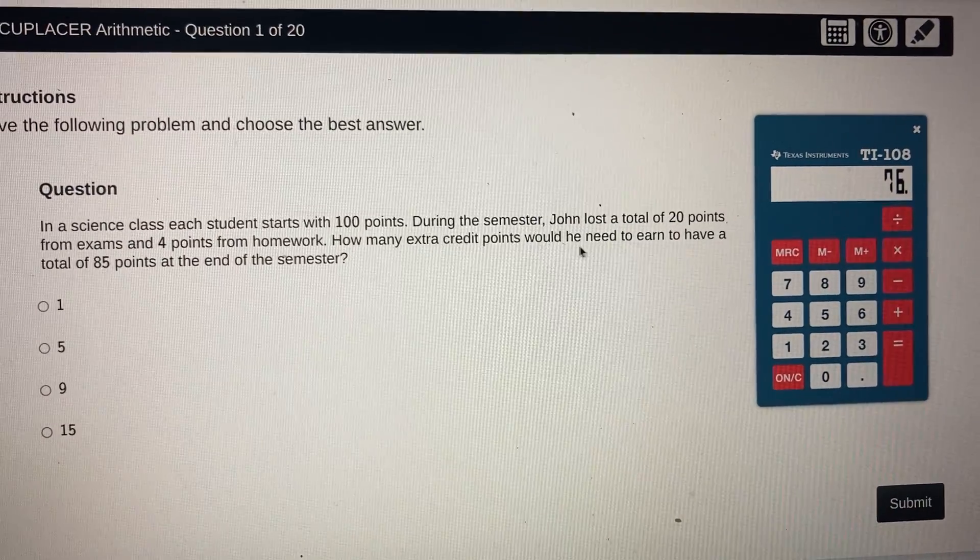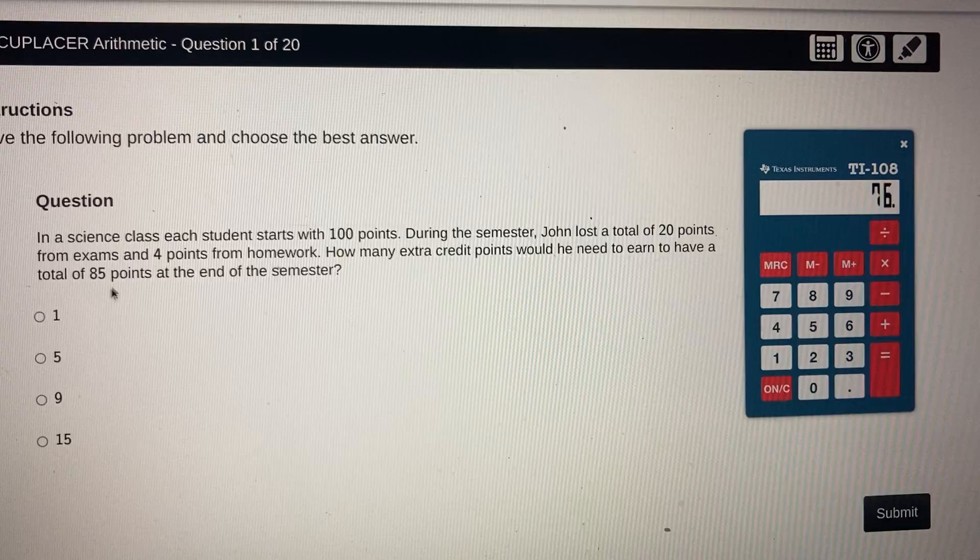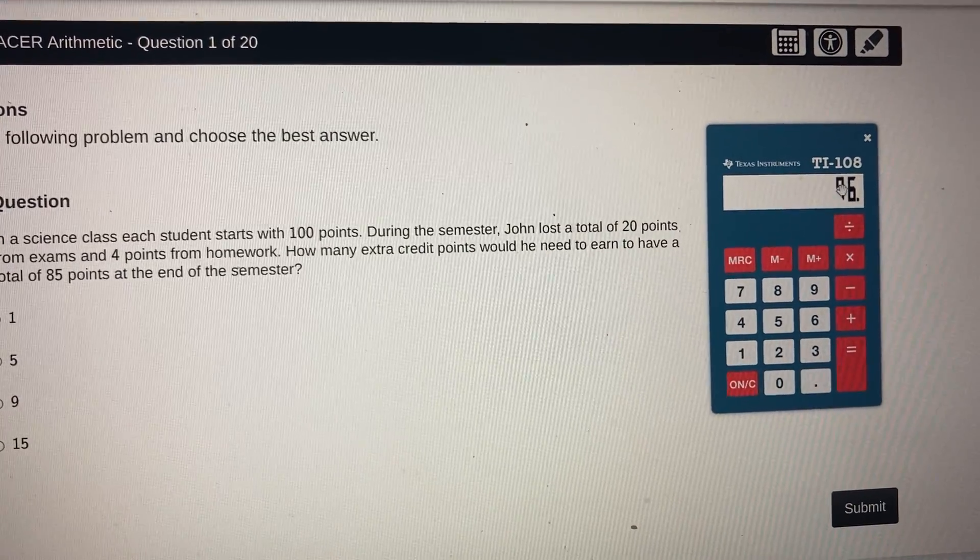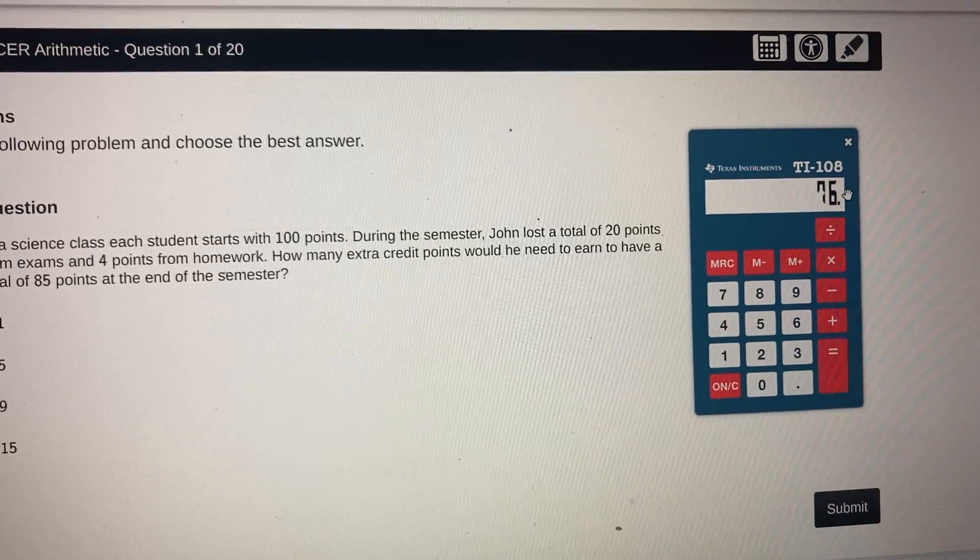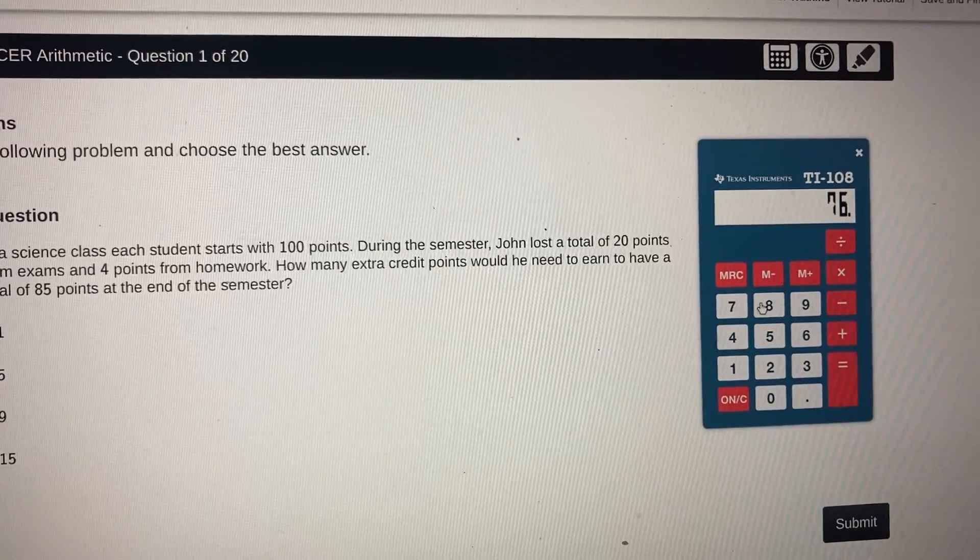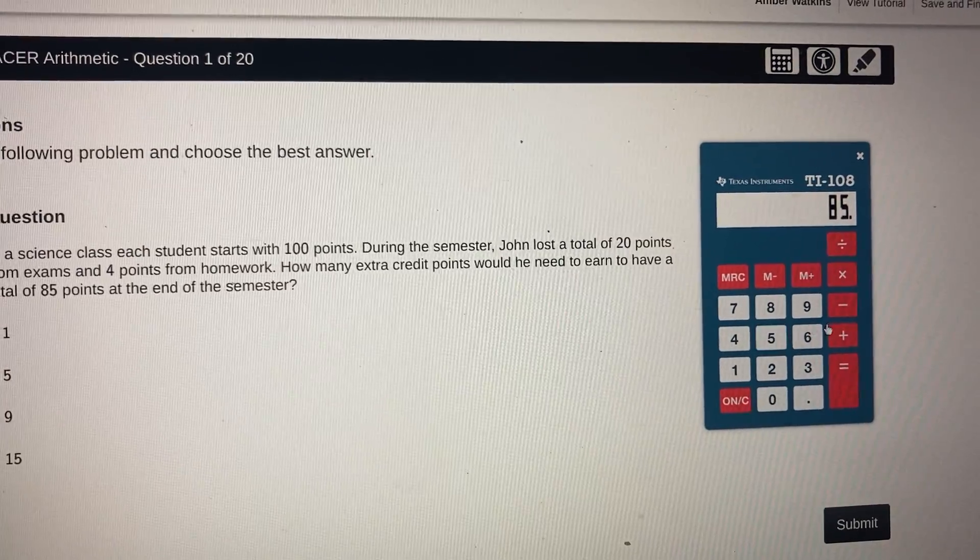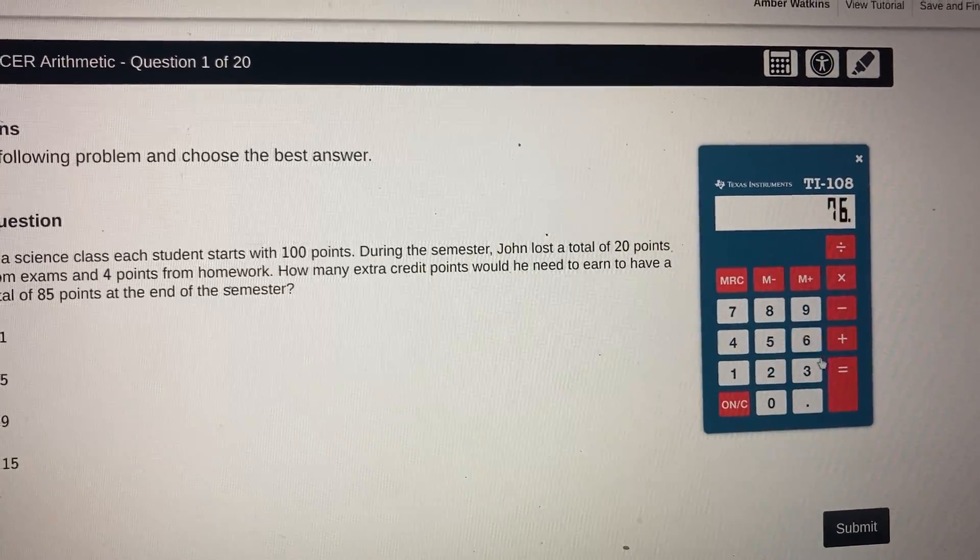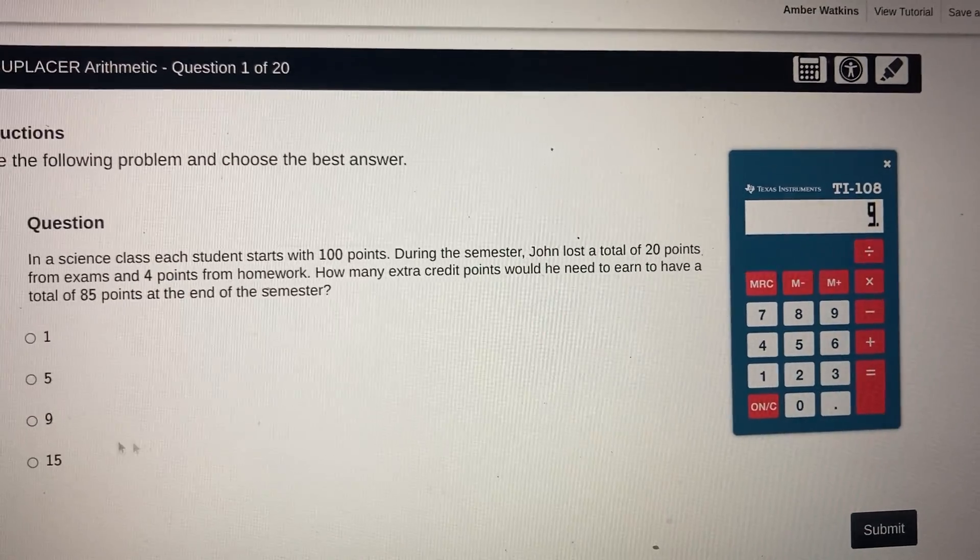They said how many extra points would I need to earn to have an 85 at the end of the semester. After losing all my points I have 76, so if I want to figure out how to go from 76 to 85, I would take 85 minus 76, and my answer would be 9.